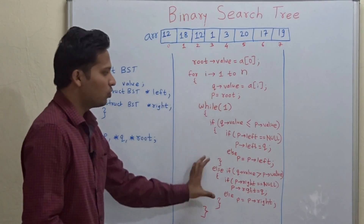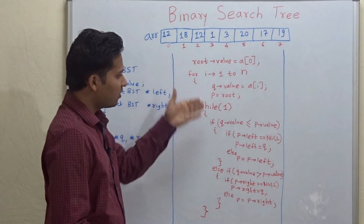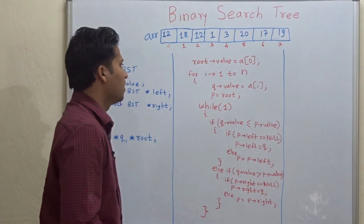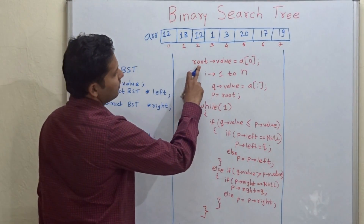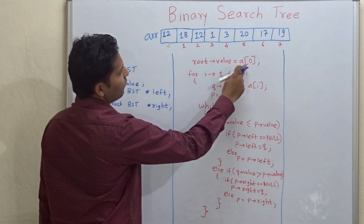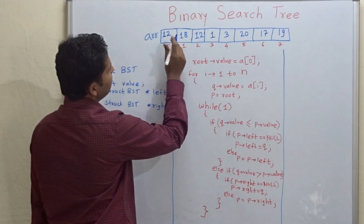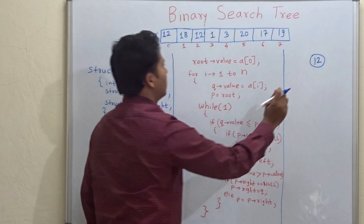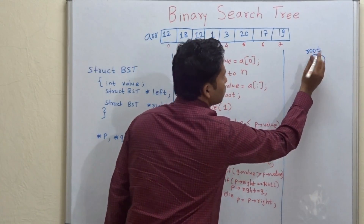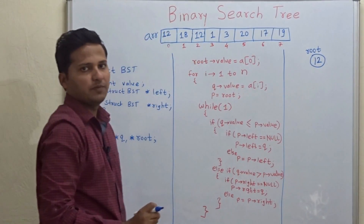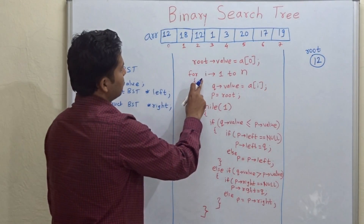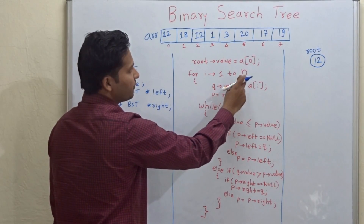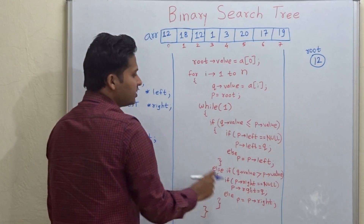Now let's go to the pseudo-code. This is the array on which we are going to execute it. First, the root value is a[0], so 12 becomes the root and the root pointer points to 12. For all other nodes — for i equal to 1 to n, where n is the size of the array — we follow this procedure.